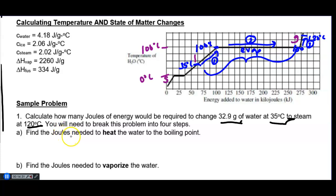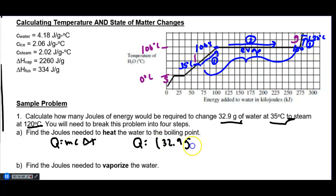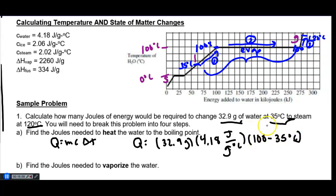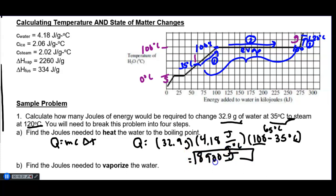Step 1: find the joules needed to heat the water to its boiling point. Use Q = mcΔT. Q = 32.9 g × 4.18 J/(g·°C) × (100 − 35)°C = 32.9 × 4.18 × 65. The 100°C is exactly the boiling point of water, so no sig fig concern there. Rounded to two sig figs: Q₁ = 8,900 joules.